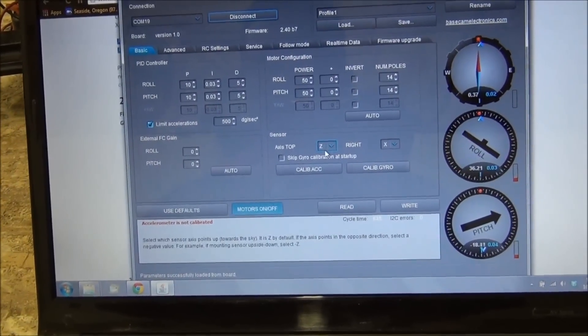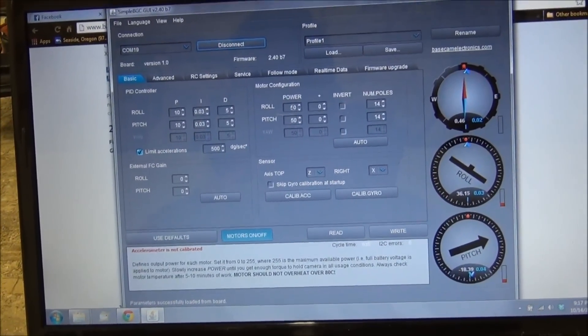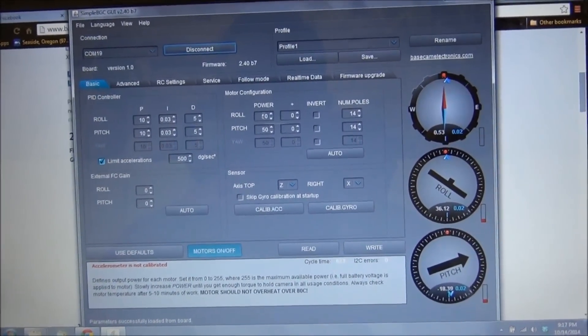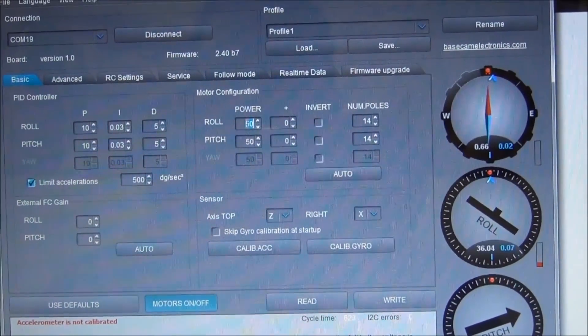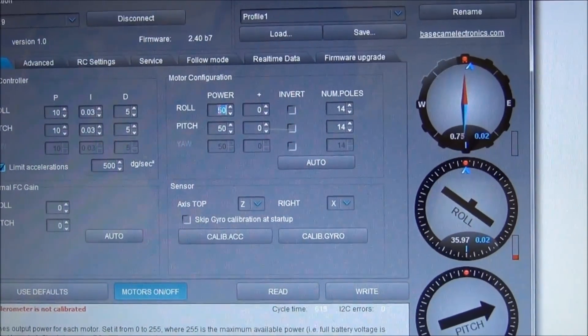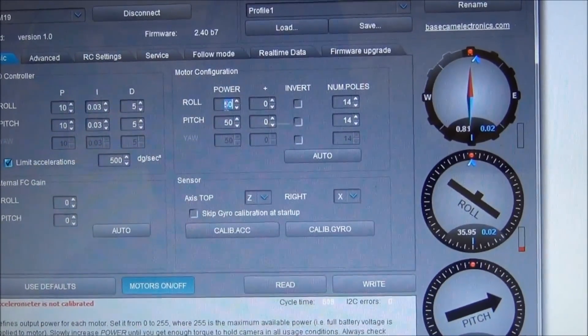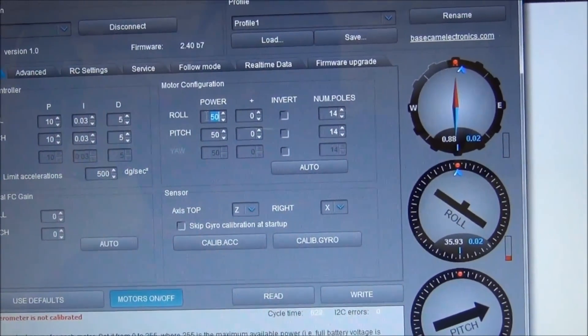What we're going to do first is we'll start up here in this motor configuration. And this first box right here, this power, that's the amount of power that the motors produce. Right now we're set at 50. The maximum value is 255.